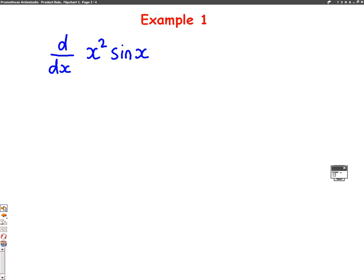Let's do an example. I want to differentiate x squared sin x. I can use the product rule here because we have two terms multiplied together. We have x squared as one term and we have sin x as the other term.